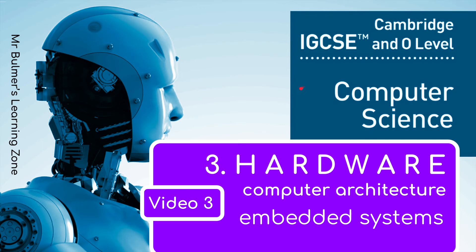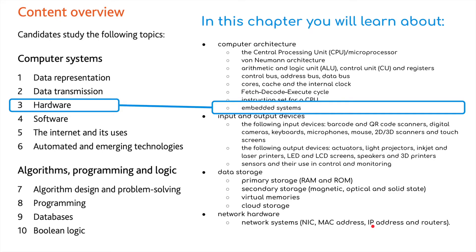Welcome back to the third video in this series related to hardware topic three from the IGCSE computer science that supports Cambridge's new syllabus for 2023 to 2025. We're going to be focusing primarily on embedded systems. We're still in the computer architecture section, but we've moved on to the final bit. We'll then go on to inputs and output devices, data storage and network hardware.